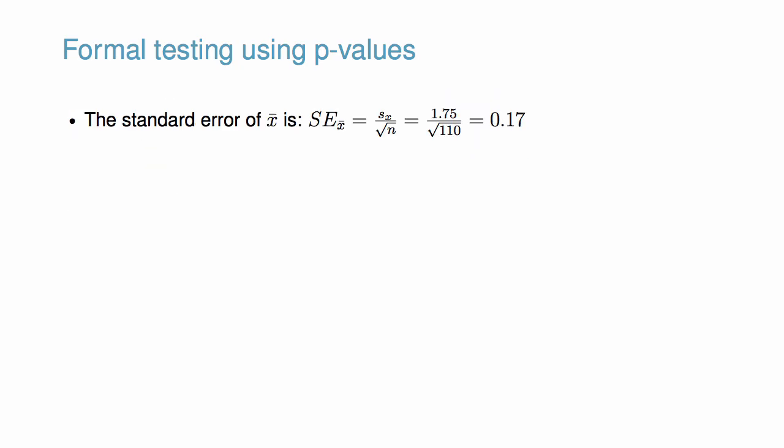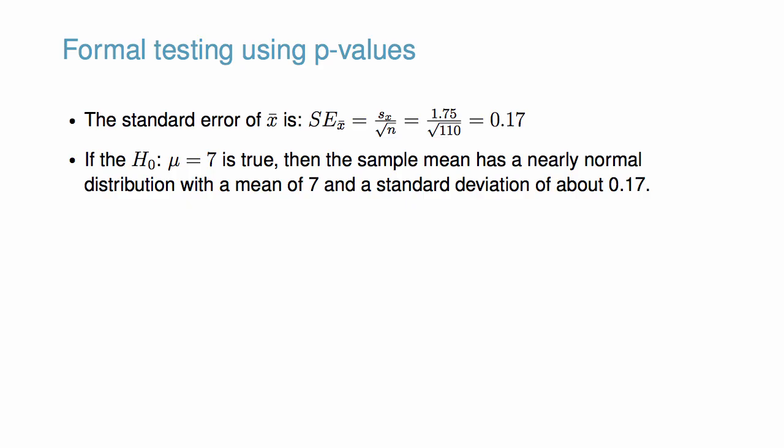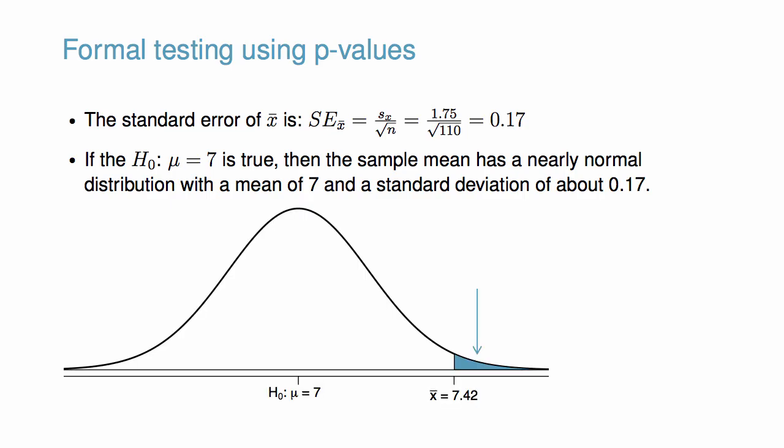The standard error of the sample mean is calculated to be 0.17. If the null hypothesis is true, then the sample mean has a nearly normal distribution with a mean of 7 and a standard deviation of about 0.17. The shaded tail represents the p-value, which is the chance of observing such a large mean, conditional on the null hypothesis being true. We compute the p-value by finding the tail area of this normal distribution.